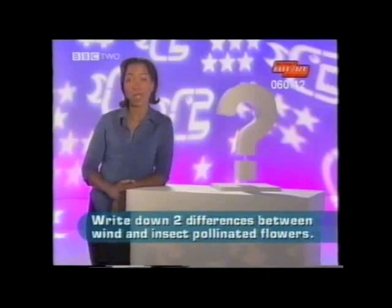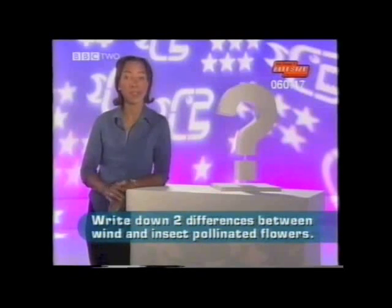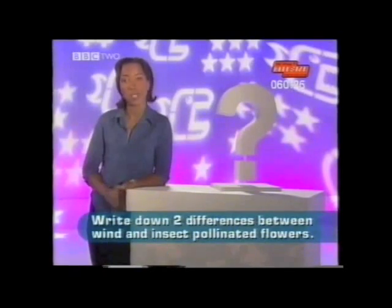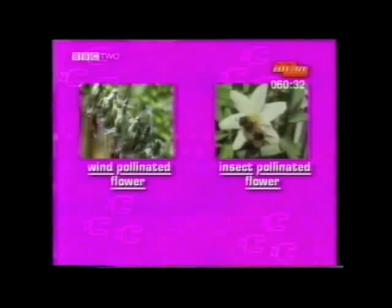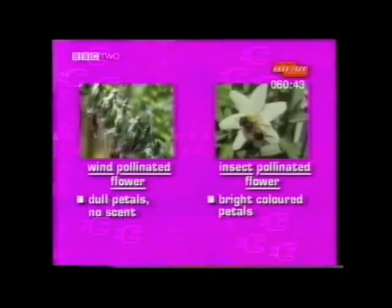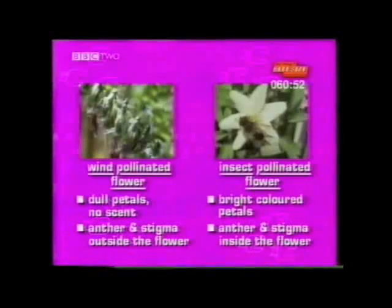Write down two differences between wind and insect-pollinated flowers. Your answer could start with wind-pollinated flowers having dull green petals and no scent, whereas insect-pollinated flowers have brightly coloured petals and scented flowers. A second difference: wind-pollinated flowers have their anther and stigma outside the flower, but in insect-pollinated flowers the anthers and stigma are inside the flower.